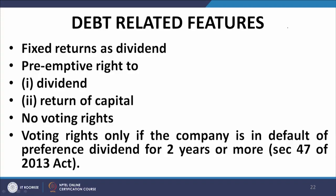Regarding the debt-related features of preference shares: they usually enjoy a fixed rate of dividend, just like lenders who have a fixed rate of interest. But please note — here the word is 'dividend,' whereas in the case of debt we use the word 'interest.' In the case of debt we use the word 'interest'; in the case of preferentials we use the word 'dividend.' We will come back to why it is so.